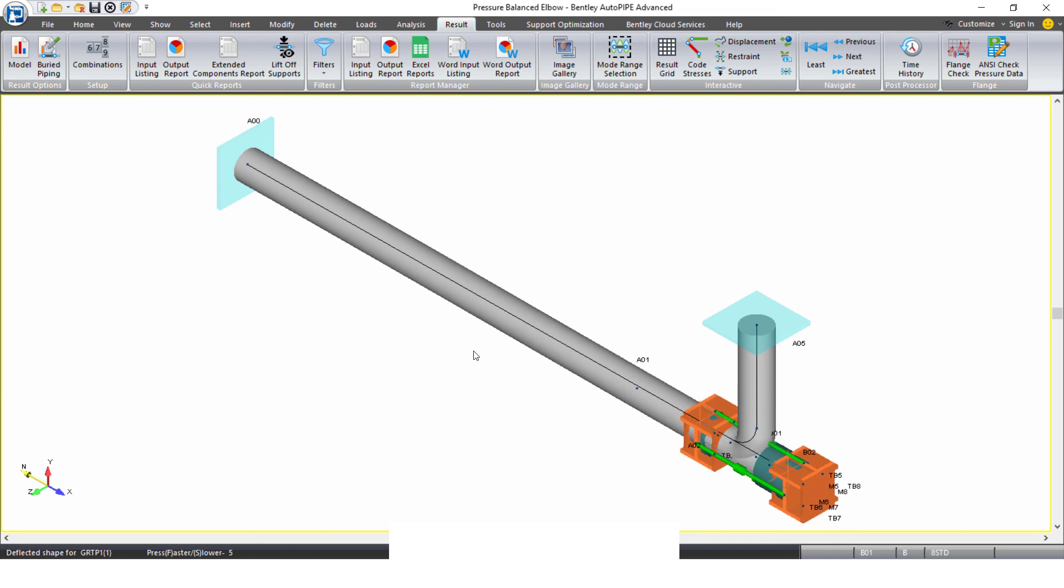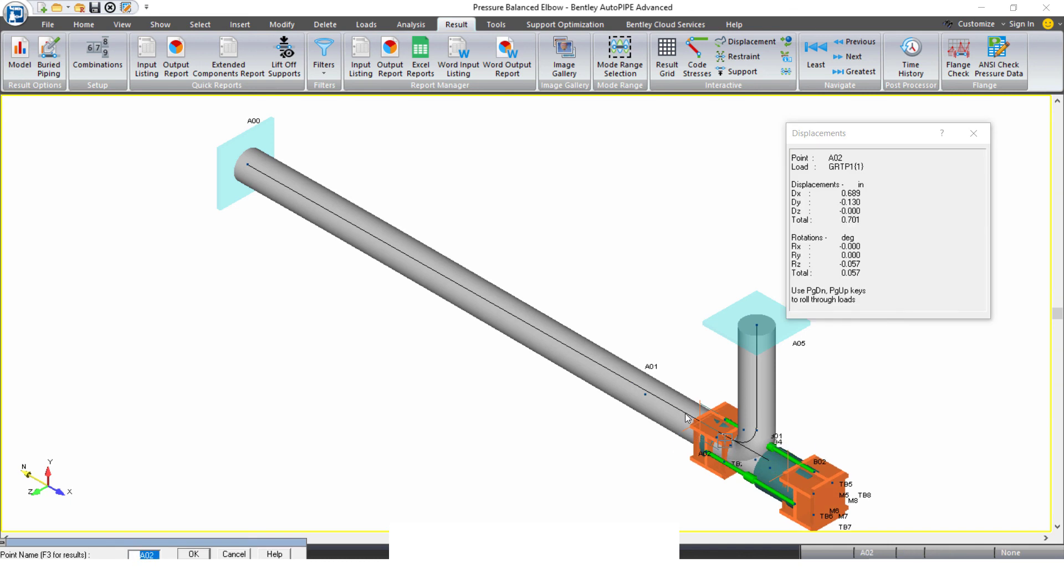We can see that there is no lateral movement, so the single bellows on the left is enough. It doesn't look like it's moving laterally. If I look at the actual values, it's not moving in the Z direction at all, so the single bellows on the left side is enough. I don't need that tied universal combination.